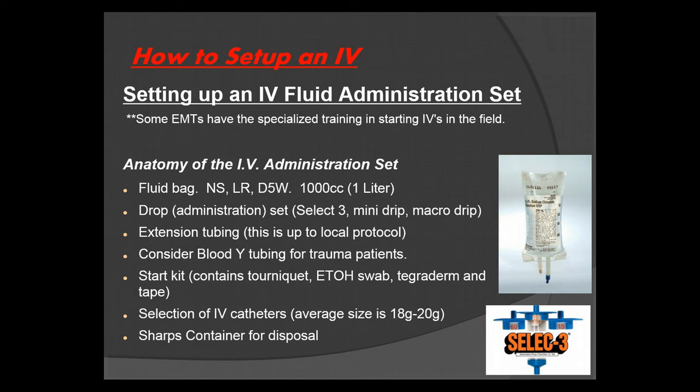Always be aware of what you have on board. You're also going to have extension tubing, though this is up to local protocol. Some services carry saline locks, some don't — in some services you will attach the IV tubing directly to the IV port. In some instances you may want to consider blood wide tubing, mainly for trauma patients, so you can administer two bags of fluids through one IV location. Your start kit contains your tourniquet, alcohol swab, tegaderm, and tape.